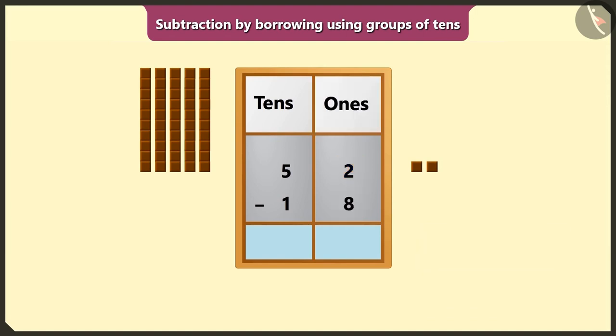So here we will borrow 1 tens from the number 5 of the box of tens. It means the number in the place of ones can borrow from its neighbor number in the box of tens. Right?